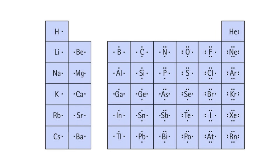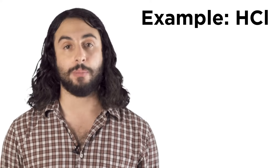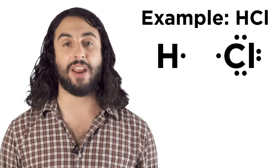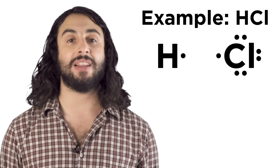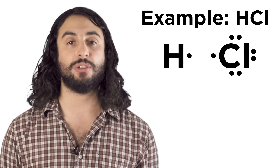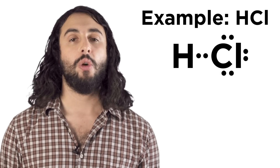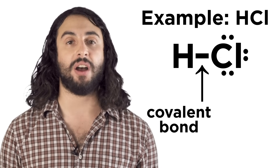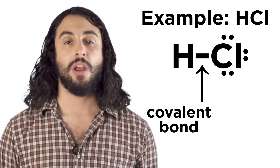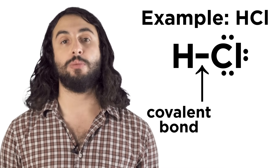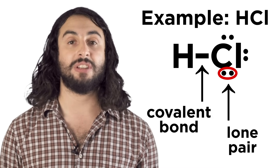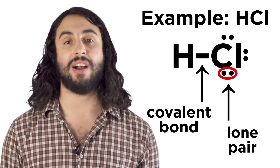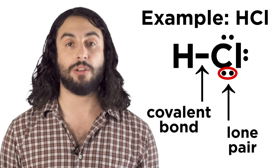Elements in the same group will have similar looking Lewis dot symbols because they have the same number of valence electrons. Now, to draw a Lewis dot structure for a molecule, just draw each atom with all of its valence electrons. Unpaired electrons from two different atoms can come together to make covalent bonds. When that happens, instead of two dots we make a line. This is a covalent bond, which always contains two electrons. A good Lewis dot structure will have all the electrons either inside covalent bonds or in lone pairs.